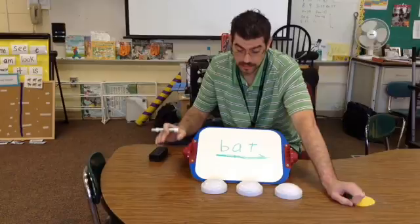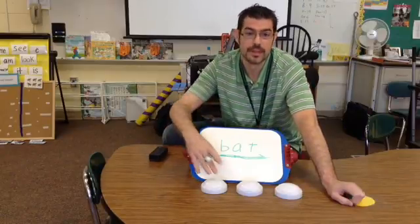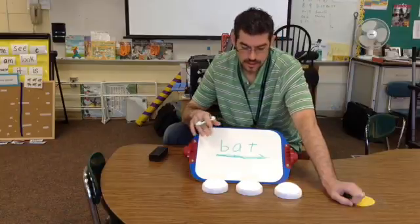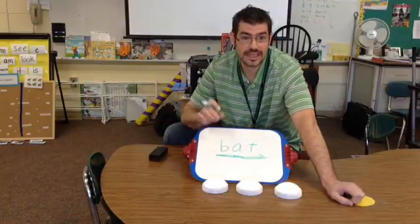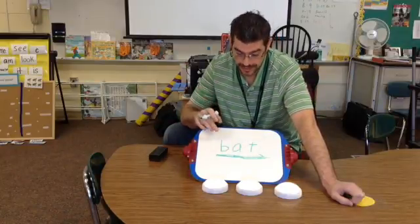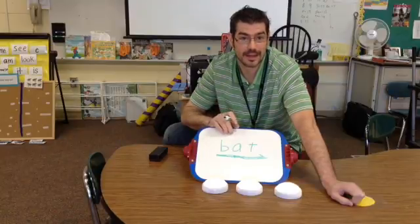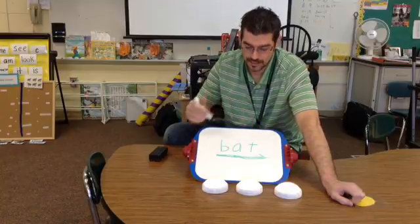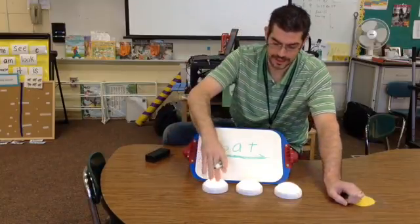But let's break it up and sound each sound out. Ready? B, A, T. When we break up those sounds, it helps us with our writing as well. So that if we ever wanted to write the word bat, we could say bat, B, B, A, A, T, T. B, A, T. And that way we could figure it out and write it that way. All right.